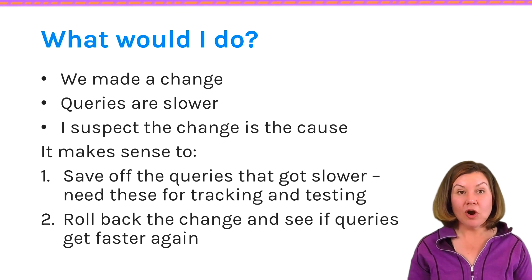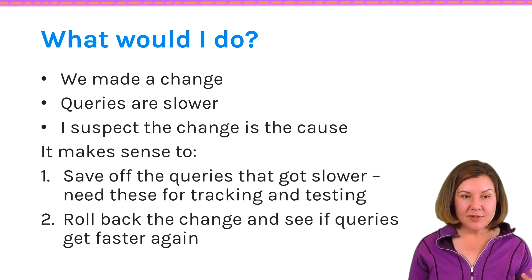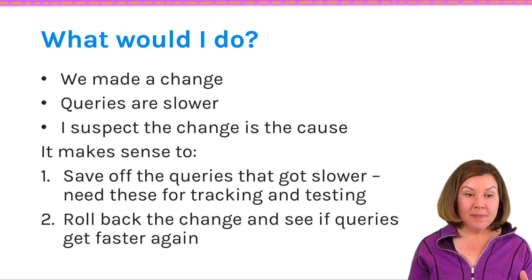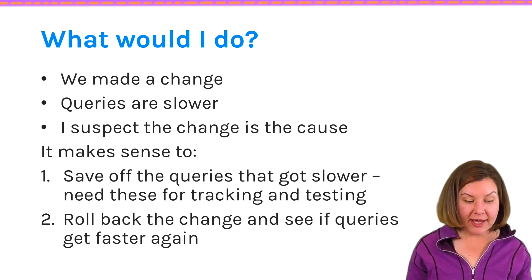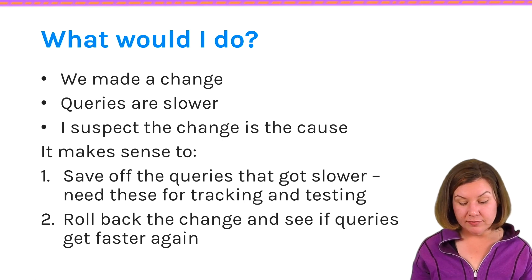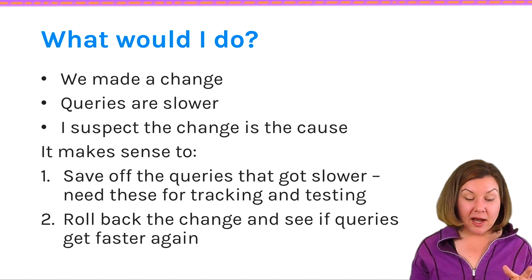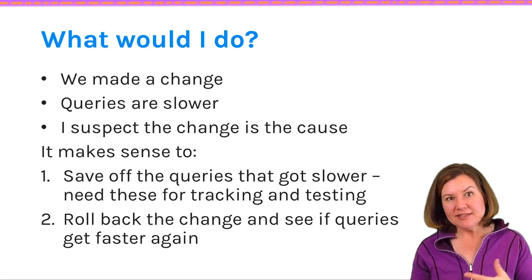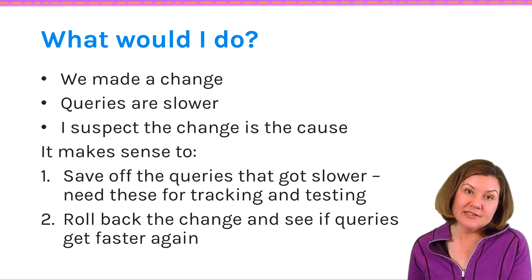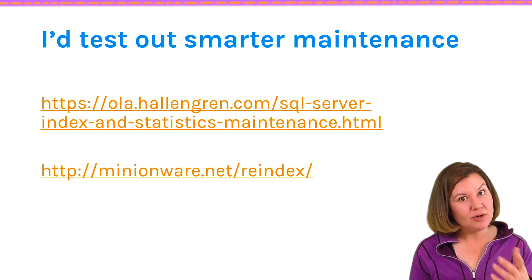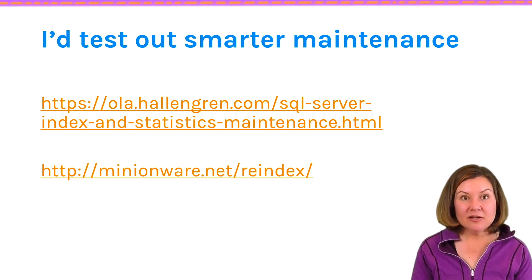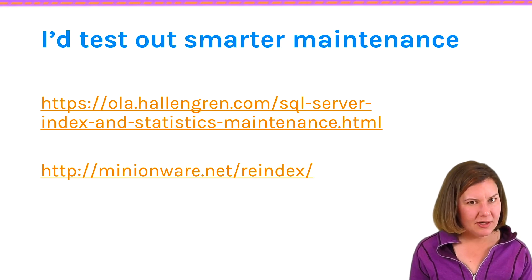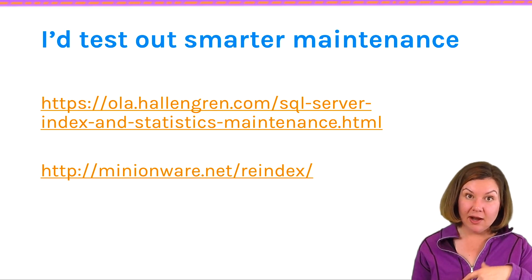In this case for our questioner, I think there are safe steps we can take. What happened is we made a change, and after the change we have a performance problem with a suspicion that the change is the cause. Whatever the change, I would always want to save off information about the queries that got slower so I can track them and not let them get slow again — then roll back the change and go back to the old way. Yeah, the old index maintenance wasn't great, but whenever we have a regression it makes sense to go back to what it was before while we figure things out. Don't be afraid to roll back unless you have a really good reason not to. It may also reveal this was unrelated — maybe you go back to the old maintenance and those queries are still slow.